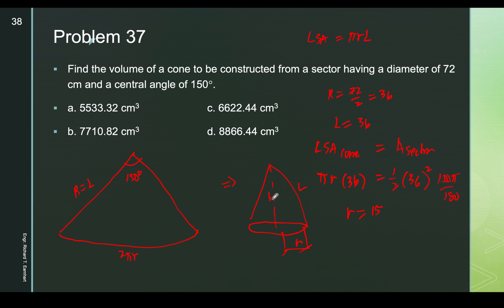The height forms a right triangle with the slant height l = 36 and radius r = 15. So h = √(l² − r²) = √(36² − 15²) = √(1296 − 225) = √1071 ≈ 32.73 cm.